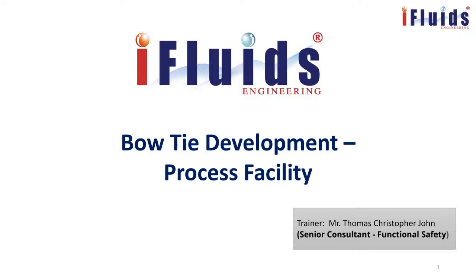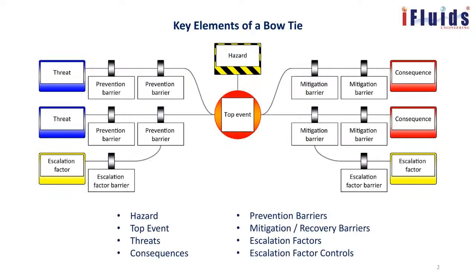Good morning all. Welcome once again to today's training session on bowtie development for the process facility. We'll have a quick recap on what we studied and learned last week, then move on to development of bowtie for a process facility. Last week we covered the eight key elements of a bowtie diagram: hazard, top event, threat, consequences, prevention barriers, mitigation or recovery barriers, escalation factors, and escalation factor controls.